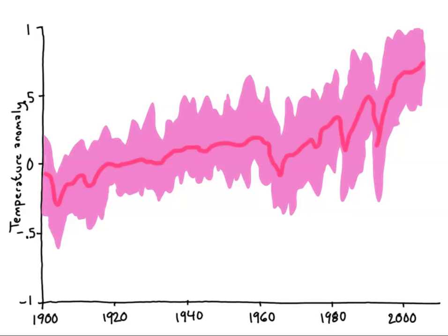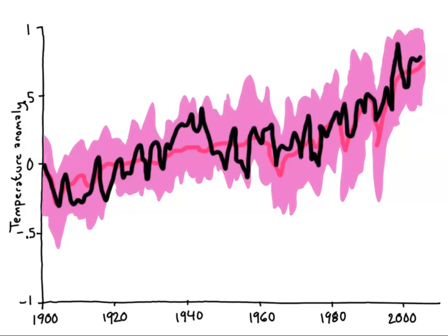The IPCC goes even further, combining the outputs for several different models. Here we see a range of outputs from models hindcasting the global temperatures for the last century. When we add the actual observed temperatures, we can see that the models did a pretty good job. The real temperatures are very close to the modeled ones.